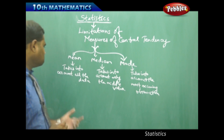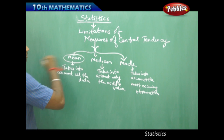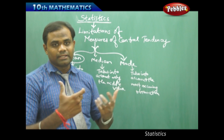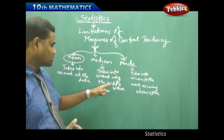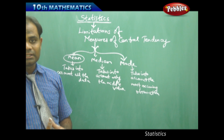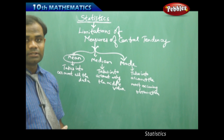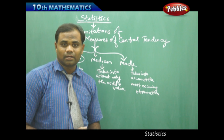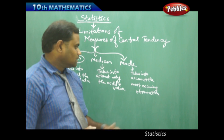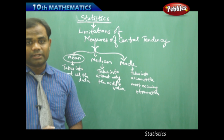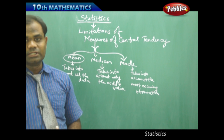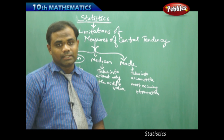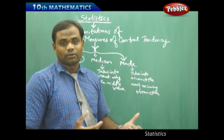Mean takes into account all the data, so it is the most suitable measure of central tendency because it gives importance to each data value. Median doesn't consider the extreme values — it takes only the middle values, so median is not affected by extreme values. This is why median has less importance in choosing a measure of central tendency. Similarly, mode takes into account only the most recurring observation while the rest are left over, so mode is also not a better measure of central tendency. The most powerful measure is mean, or arithmetic mean.